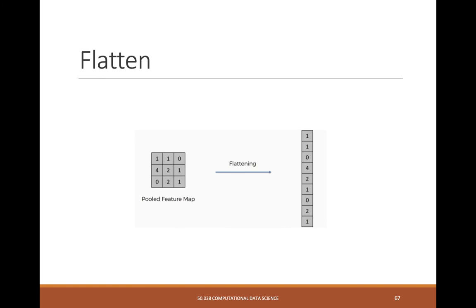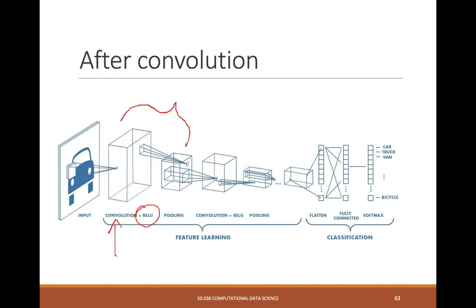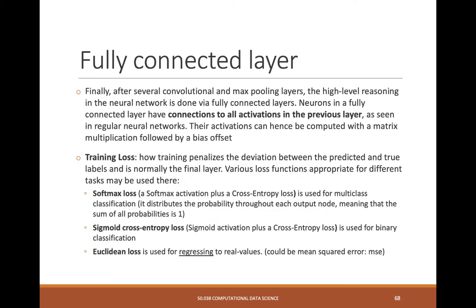After all the convolutions are repeated, we flatten the layer. Flatten is pretty simple — you just change the shape of the vector. Then we have a fully connected layer. Now we're back to one-dimensional vectors — normal neural networks. Typically you add one, two, or more fully connected layers. It's called a fully connected layer because all of the inputs have connections to all of the nodes — just a simple normal neural network.